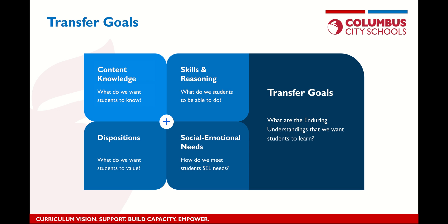It's not just that we want students to have certain knowledge and skill sets — those are important for solving societal problems — but we also have to have certain things that we value. We have to have certain civic dispositions and want to contribute to the common good. We also need to be cognizant of students' social-emotional needs: how do we meet the needs of individual students, and of students collectively, especially in times of crisis? That factors into our transfer goals as well. We're educating humans with their own social-emotional needs and experiences, not simply widgets.